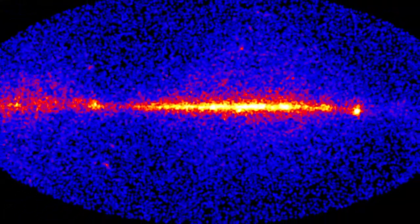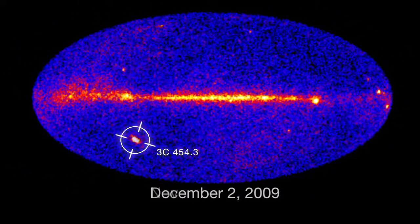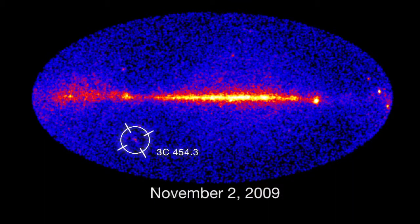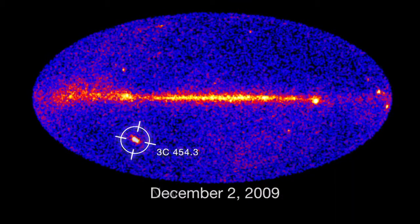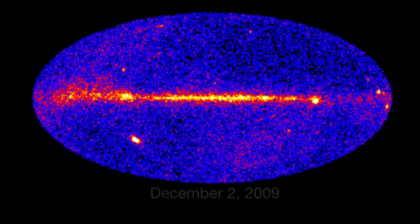Blazars are extremely active objects. Here's one of the most extreme Fermi has seen. It's been known to flare up so brightly that for a few days, it outshines every other gamma ray source. Considering that it's more than 7 billion light years away, this is an immense energy output.